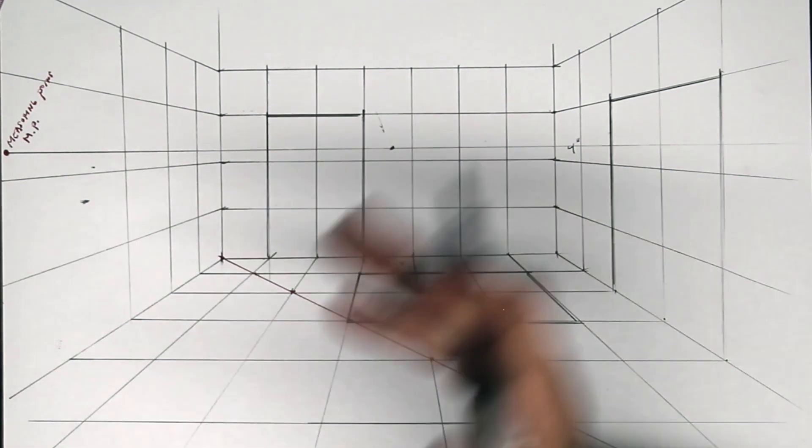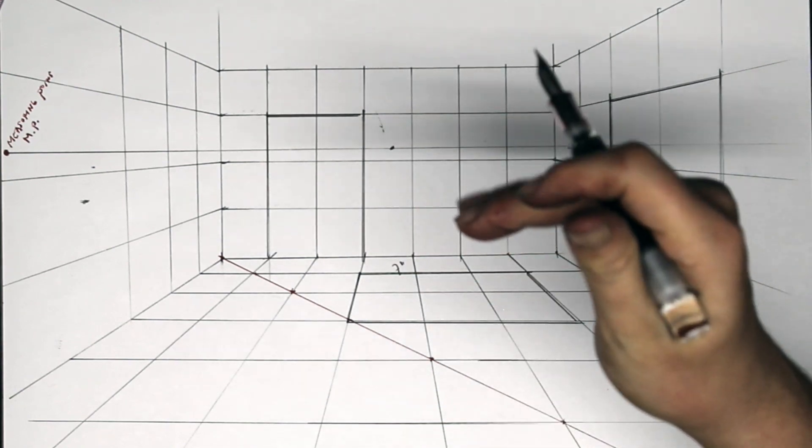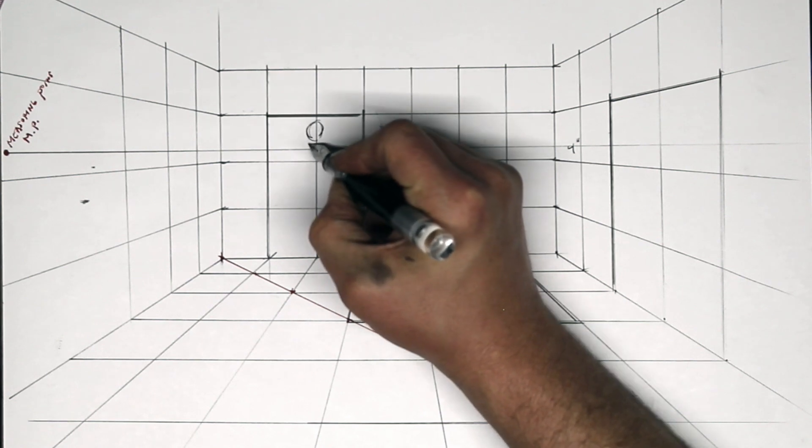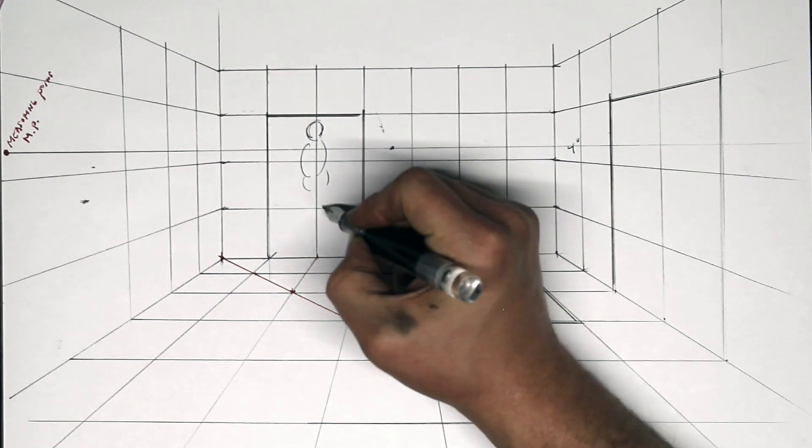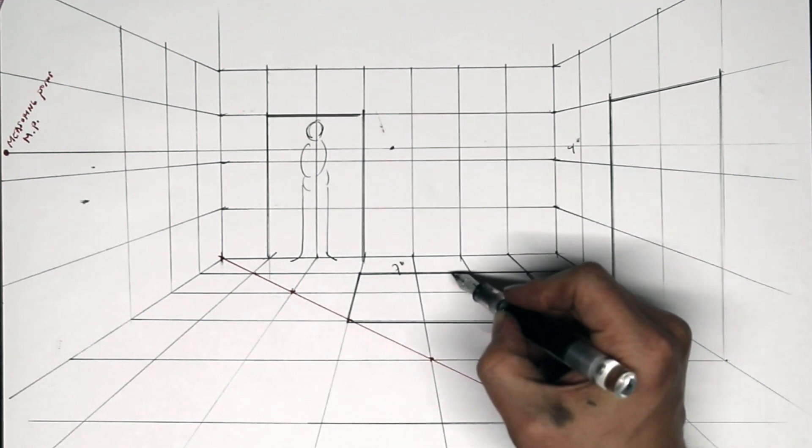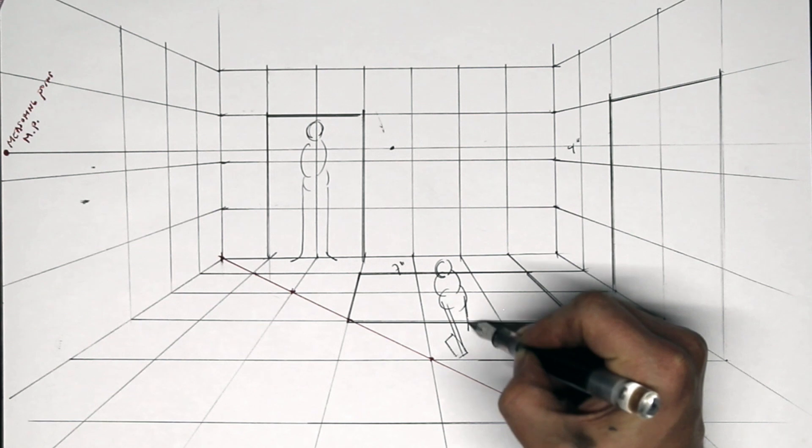This is really useful if you're doing a multi-figure composition. It also allows you to figure out that if I have a figure standing right here, that that same figure laying down will start here and end up right here.